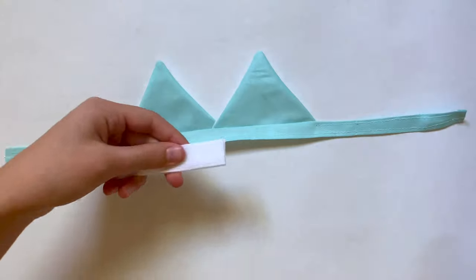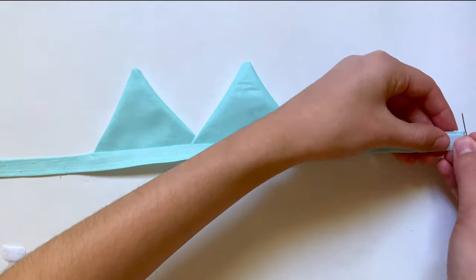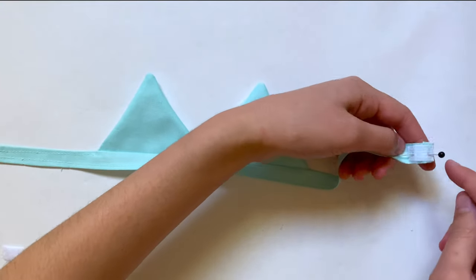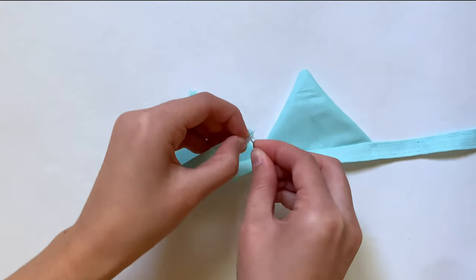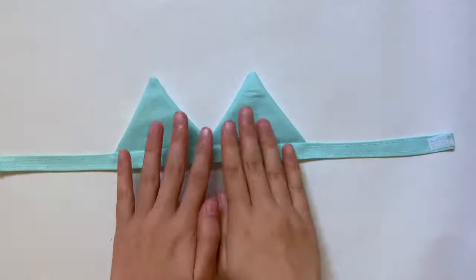Next I'm gonna be adding velcro so these two ends can connect in the back. I'm just cutting a small piece of velcro and pinning one on each side. Make sure one is on the good side of fabric and the other is on the bad side so they face each other when you want to stick them together. I'm gonna sew around the entire perimeter of the rectangle to attach these.